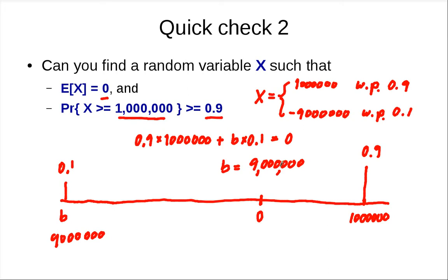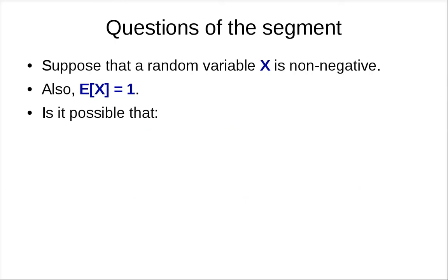X can be extremely large with 90% probability. This shows that when the expected value is small or close to zero, you cannot say that the actual value will be small with high probability or any probability at all.